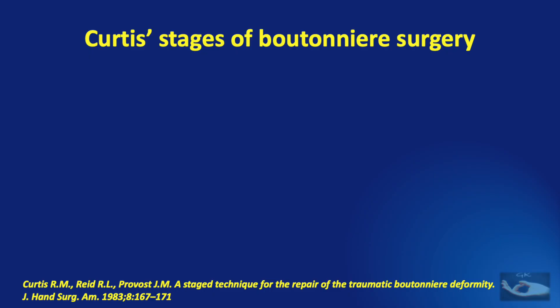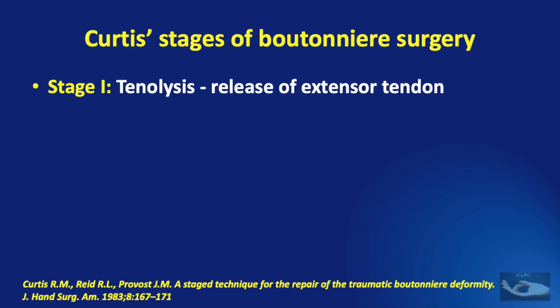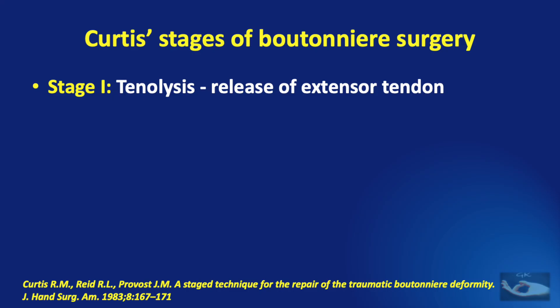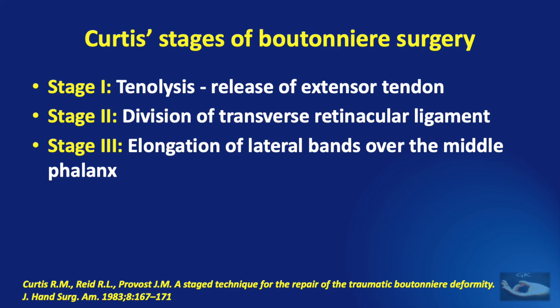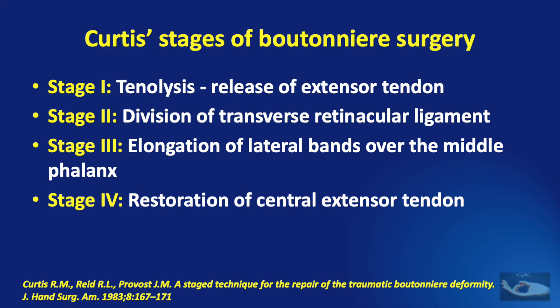Curtis in 1983 tried to stage these procedures. Stage 1 consists of extensor tenolysis and release so that the extensor expansion is totally freed. If the boutonniere deformity is not corrected and the PIP joint is still not coming into extension, stage 2 involves division of the transverse retinacular ligaments. In stage 3, elongation of the lateral bands over the middle phalanx can be attempted, and finally stage 4 involves restoration of the central extensor tendon by any of the procedures described.